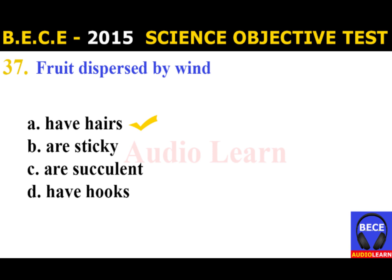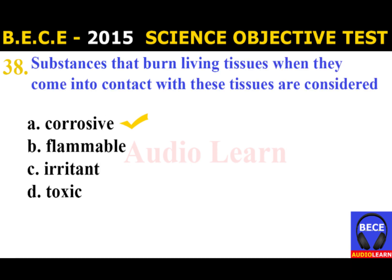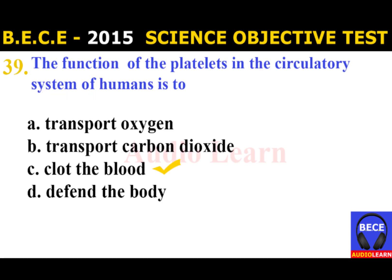Number 37: Fruits dispersed by wind A. Have hairs, B. Are sticky, C. Are succulent, D. Have hooks. The answer is A. Have hairs. Fruits dispersed by wind have hairs. Number 38: Substances that burn living tissues when they come into contact with these tissues are considered A. Corrosive, B. Flammable, C. Irritant, D. Toxic. The answer is A. Corrosive.